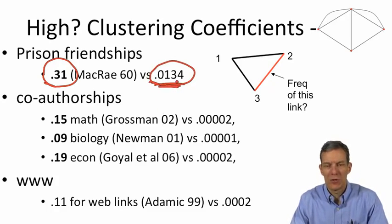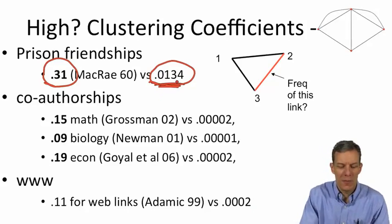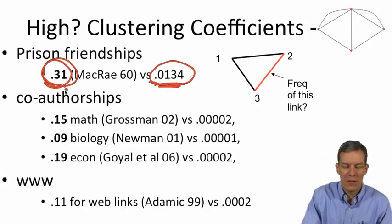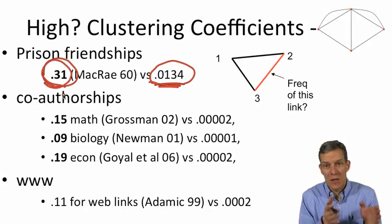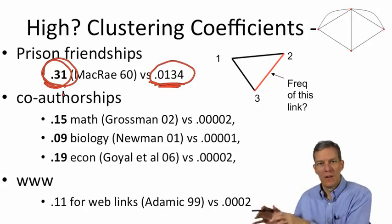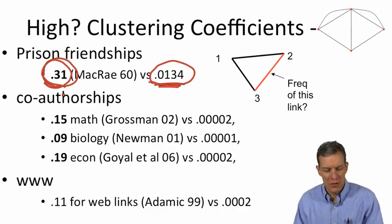So then there's basically about 1.3% of the links are present, and so your clustering should be 1.3 if it was uniformly at random, and yet it's 31% in the data.